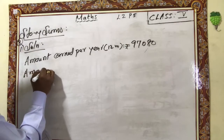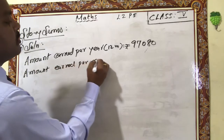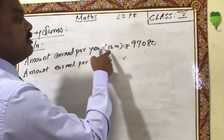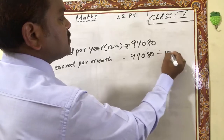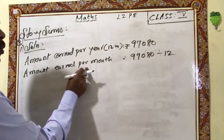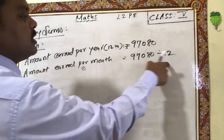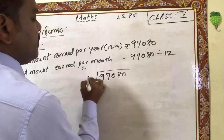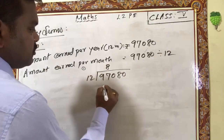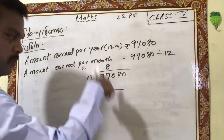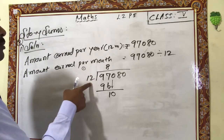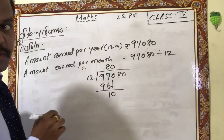97,080 divided by 12. Table 12 is very easy. 8 × 12 is 96, balance 1. Bring the next number down — 0 — giving 10. 10 is less than 12, so if you bring down any number and that number is not divisible by the divisor, you have to add one zero in the quotient. Then bring the next number down.